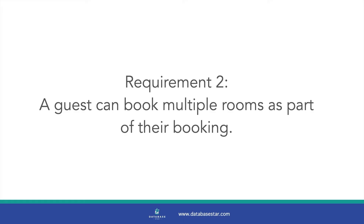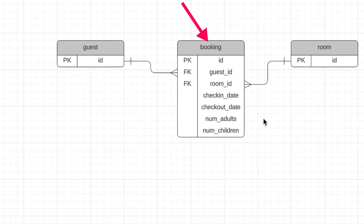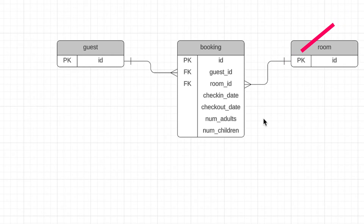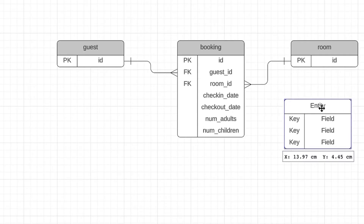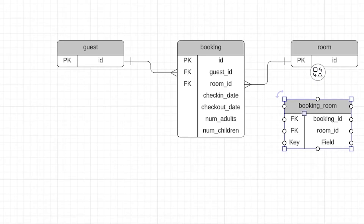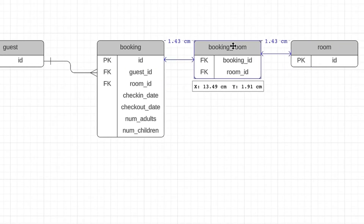Requirement 2 says a guest can book multiple rooms as part of their booking, which may be if they have multiple people and want separate rooms. In our diagram we have the booking table and the room table. At the moment it's a one-to-many relationship, but this requirement states that a booking can have many rooms, turning it into a many-to-many relationship. We'll need to add a joining table between these two tables. We'll call it booking_room and add both a booking ID and a room ID as foreign keys. Requirement 2 is now met.